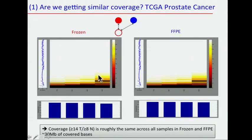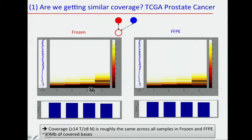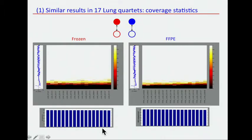Here we can talk about coverage on frozen versus FFPE. You can see all the targets that we try to capture — these are the TCGA prostate cancers. Most of the targets that are captured well in the frozen are also captured well in the FFPE, and the ones that are not captured well in the frozen are not captured well in the FFPE. So it looks consistent. The coverage criteria of 14 and 8 reads in the tumor-normal — we see the same thing for the lung cancer. So coverage is not an issue.